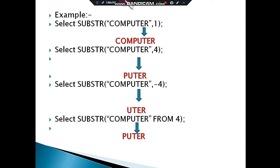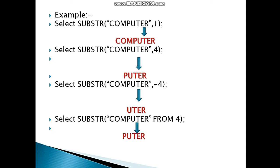In the next example, the given string is again 'computer' and the start position is four. At position four the character is 'p' — c, o, m, p — so the output will be 'p-u-t-e-r'.